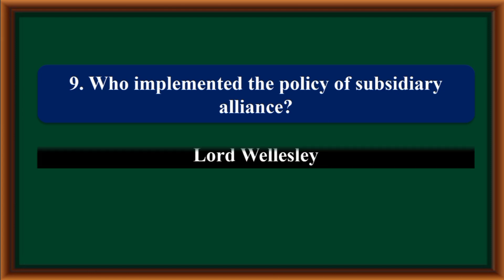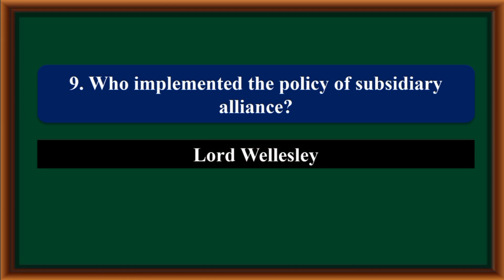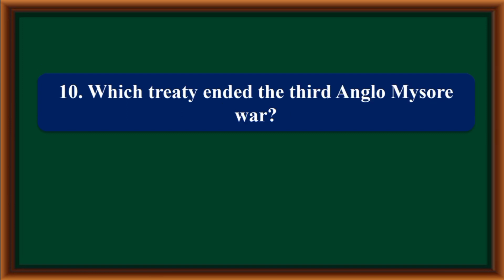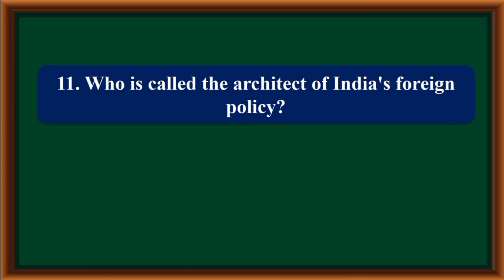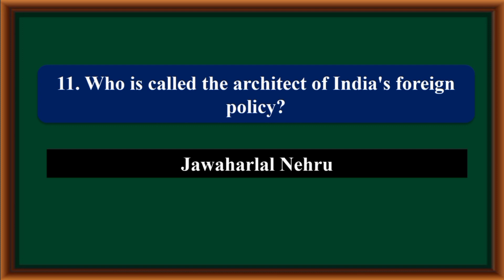Section 2 — Answer the following questions in a sentence each. Who implemented the policy of Subsidiary Alliance? Lord Wellesley implemented the policy of Subsidiary Alliance. Which treaty ended the Third Anglo-Mysore War? The Srirangapatna Treaty ended the Third Anglo-Mysore War. Who is called the architect of India's foreign policy? Jawaharlal Nehru is called the architect of Indian foreign policy.